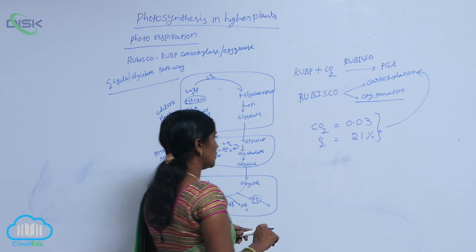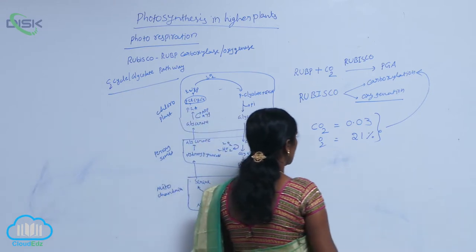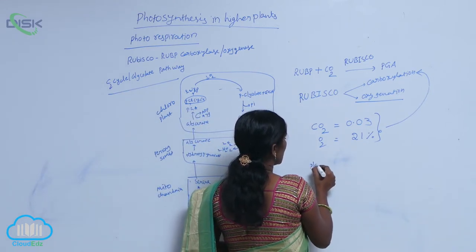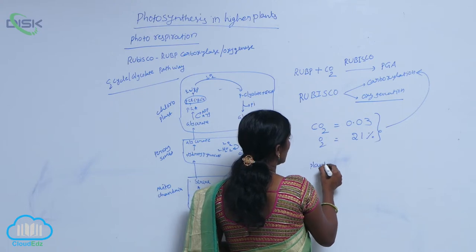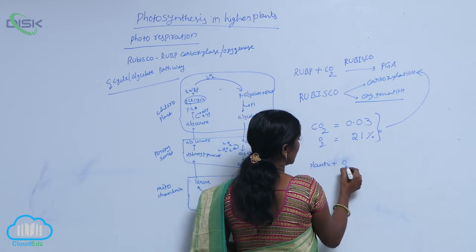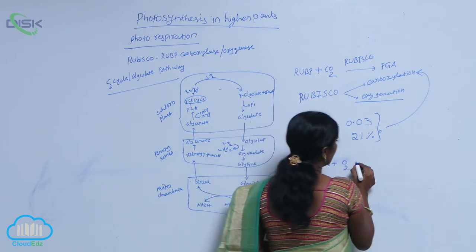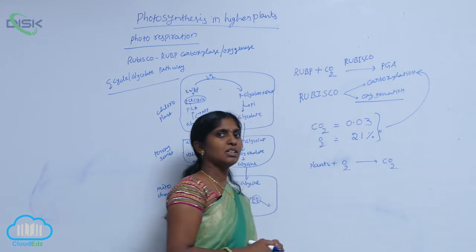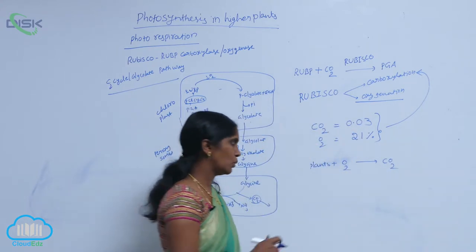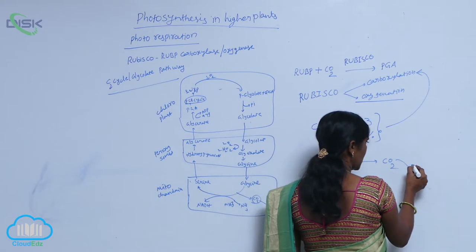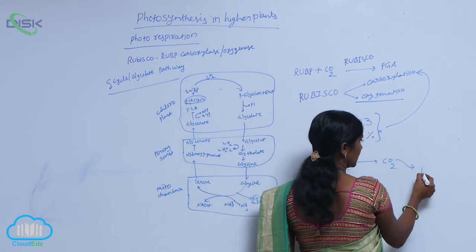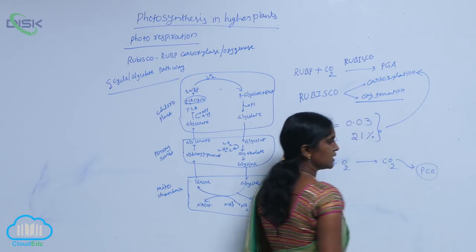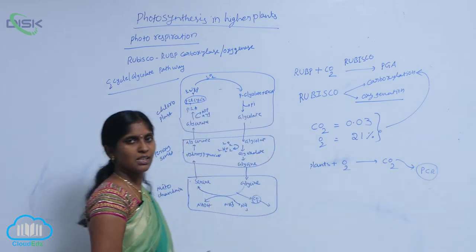What happens in photorespiration? In photorespiration, plants absorb O2 and release CO2. The released CO2 is then utilized for the PCR cycle, that is the C3 cycle.